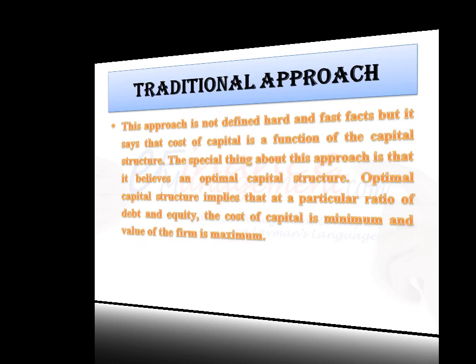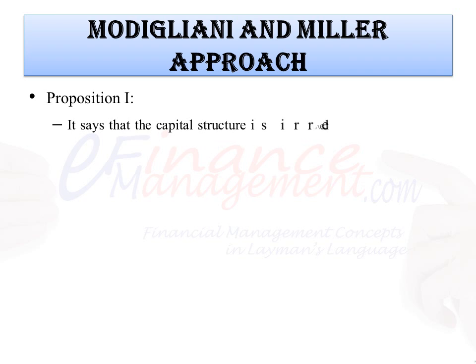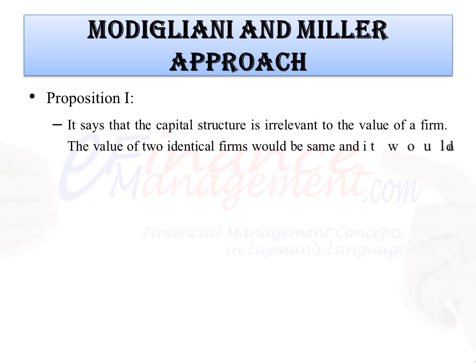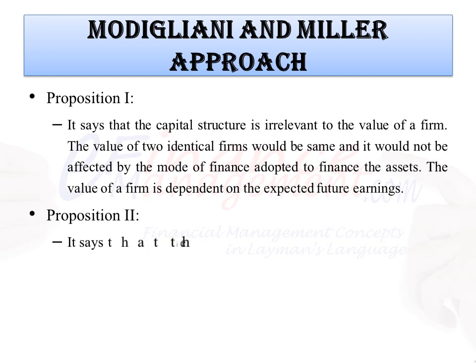Modigliani and Miller approach: This is a capital structure theory named after Franco Modigliani and Merton Miller. MM theory proposes two propositions. Proposition 1 says that the capital structure is irrelevant to the value of a firm — the value of two identical firms would be the same and would not be affected by the mode of finance adopted to finance the assets. The value of a firm is dependent on the expected future earnings. Proposition 2 says that financial leverage boosts the expected earnings, but it does not increase the value of the firm because the increase in earnings is compensated by the change in the required rate of return.